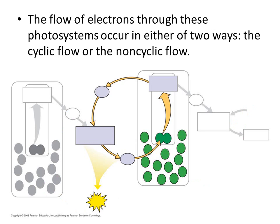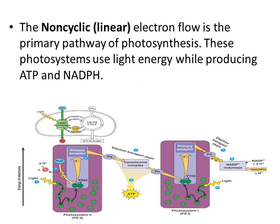The flow of electrons through these photosystems occurs in two ways: either a cyclic flow that will only use PS1, or a non-cyclic flow, which means it flows in a straight line going from PS2 to PS1. In the non-cyclic or linear flow process, you are going to produce ATP and NADPH by moving electrons that were stimulated by light energy.